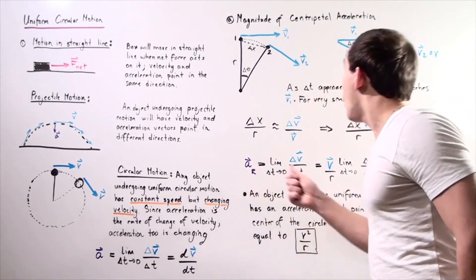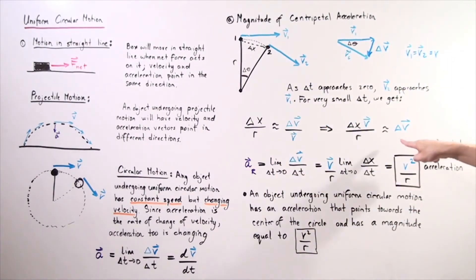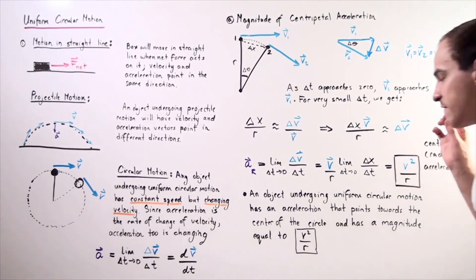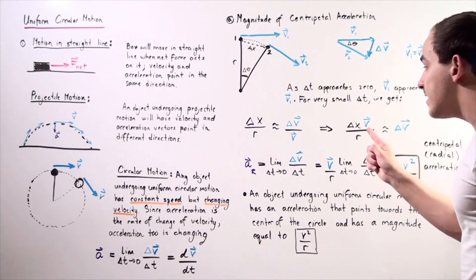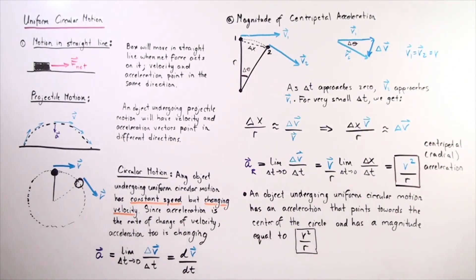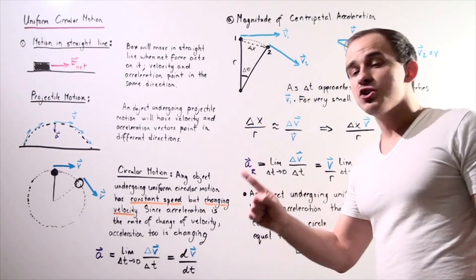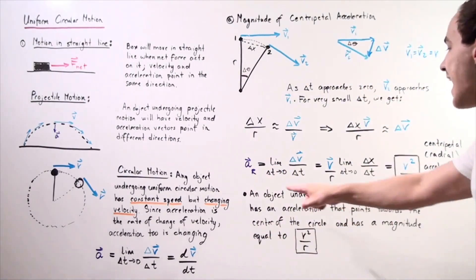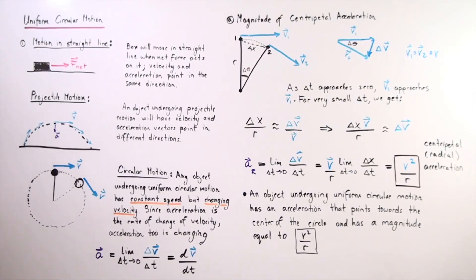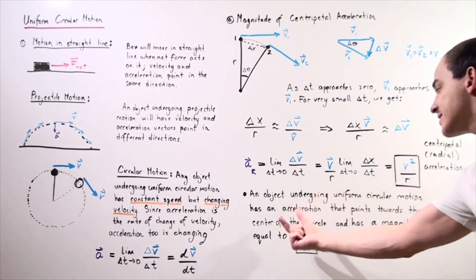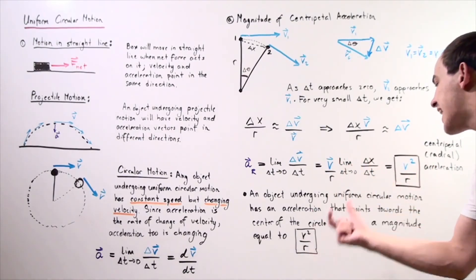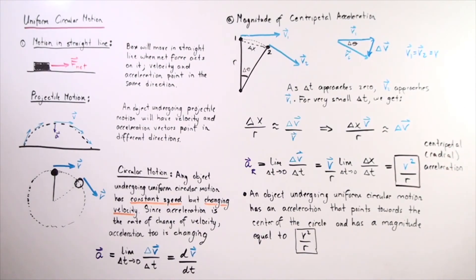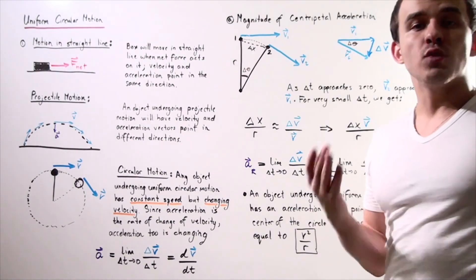Radial acceleration, or centripetal acceleration, equals velocity squared divided by radius. The magnitude of that radial acceleration depends on the velocity of the object and the radius of the circle. If velocity increases, acceleration also increases; if the radius increases, acceleration decreases. An object undergoing uniform circular motion has an acceleration called radial or centripetal acceleration that points towards the center of the circle and has magnitude equal to v squared divided by r.